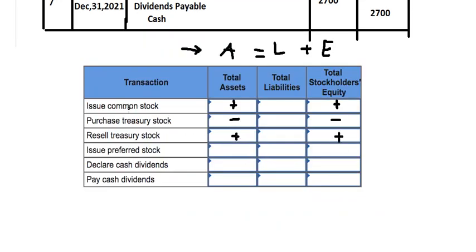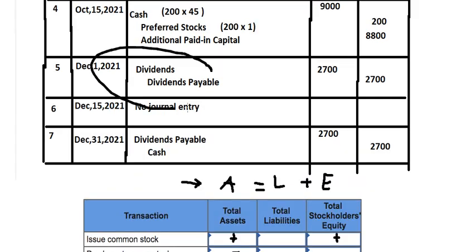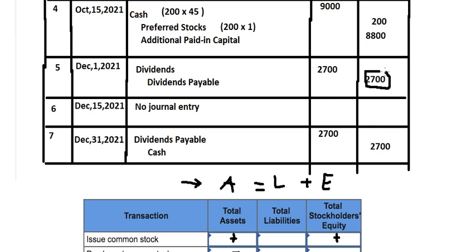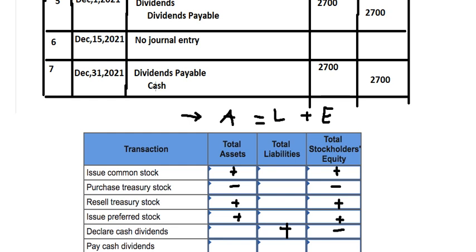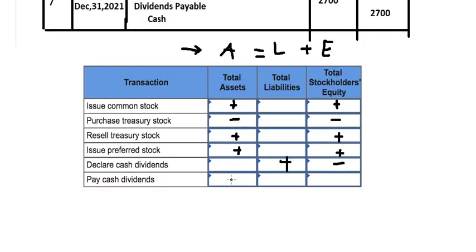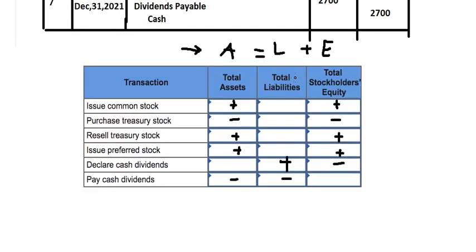For declaring cash dividends, current liabilities increase because dividends payable is credited, while dividends reduce equity — so equity is negative. For paying cash dividends, we reduce cash (assets) and reduce dividends payable (liabilities). That is the answer for question number two.